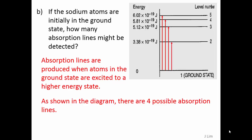Absorption lines are produced when atoms in the ground state are excited to a higher energy state. As shown in the diagram, there are 4 possible absorption lines.